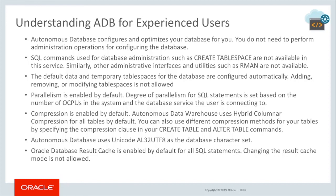Parallelism is enabled by default. Degree of parallelism for SQL statements is set based on the number of OCPUs in the system and the database service the user is connecting to. Compression is enabled by default — Autonomous Data Warehouse uses hybrid columnar compression for all tables by default. You can also use different compression methods for your tables by specifying the compression clause in your Create Table and Alter Table statements. Autonomous Databases use Unicode AL32UTF8 as the database character set. Oracle Database Results Cache is enabled by default for all SQL statements, and changing the result cache mode is not allowed.